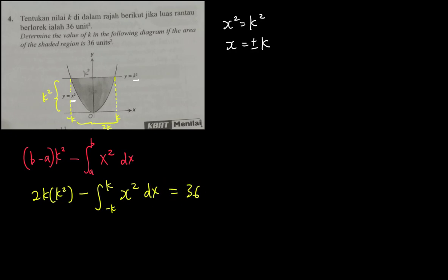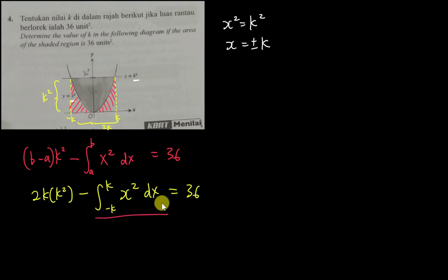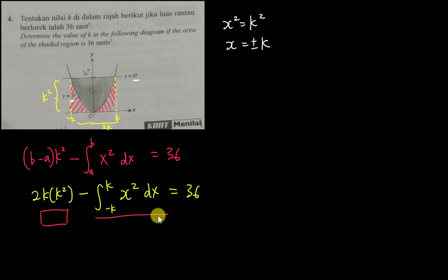Then I minus the area under the curve, which is the integral from negative k to k of x² dx, and this equals 36. The red shaded region I'm finding is the area under the curve from negative k to positive k, and the rectangle minus that red area gives me 36.